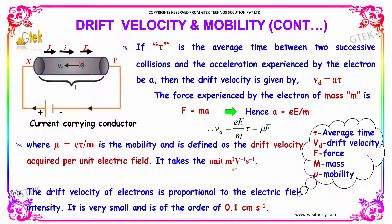Mobility takes the unit of meter squared per volt per second. The drift velocity of electrons is proportional to the electric field intensity. It is very small and is of the order of 0.1 cm per second.